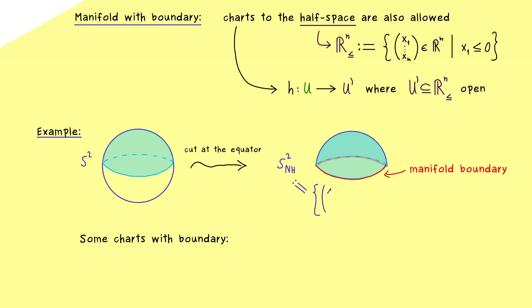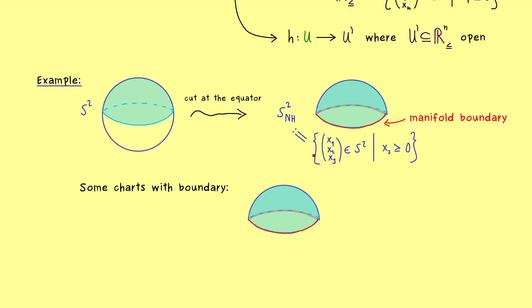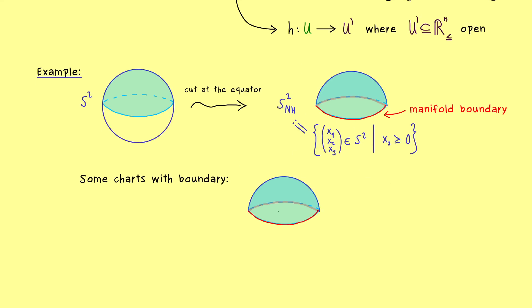Therefore, first let's write down the formal definition of our manifold here. These are all the points from S^2, where the last component x_3 is greater or equal than 0. And now for the definition of the chart, we also have to restrict another component here.